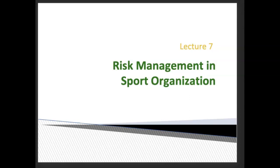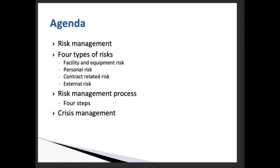Hello everyone, welcome to this lecture. We are going to talk about risk management in sports organizations. Our agenda includes: the definition of risk management, four types of risk — facility and equipment risk, personal risk, contract-related risk, and external risk — followed by the four steps of the risk management process.